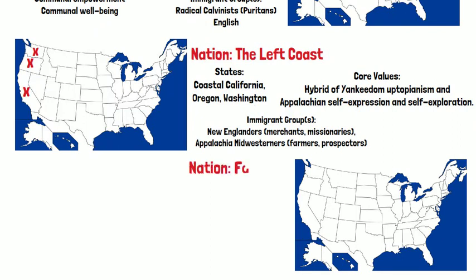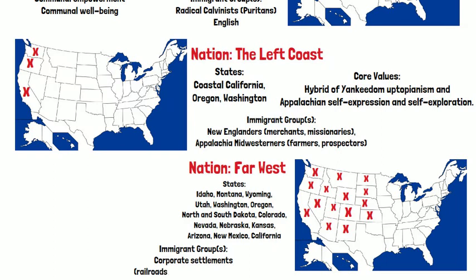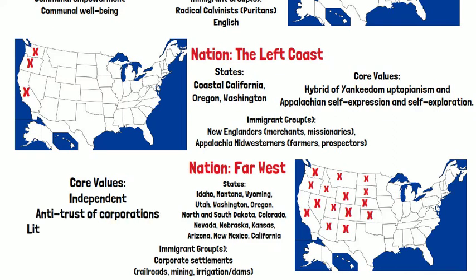The next nation is the Far West. The immigrant groups here were based on corporate settlements from the railroads, mining, irrigation, and dams. The states include Idaho, Montana, Wyoming, Utah, Washington, Oregon, North and South Dakota, Colorado, Nevada, Nebraska, Kansas, Arizona, New Mexico, and California. The core values here are independence, antitrust of corporations, and little government involvement.